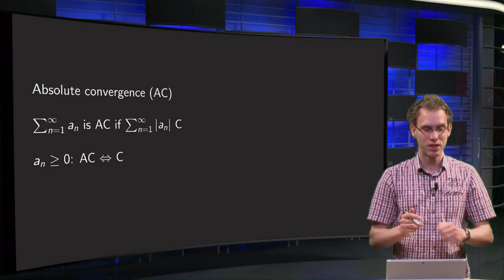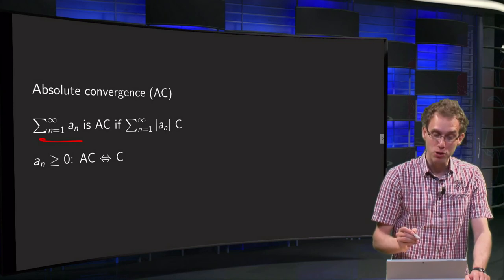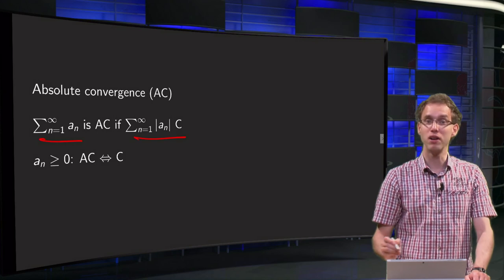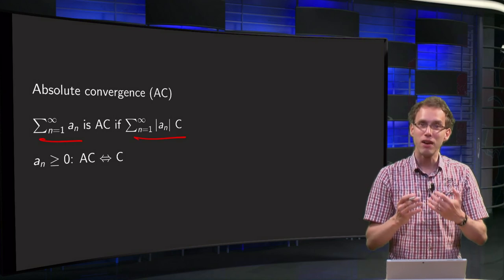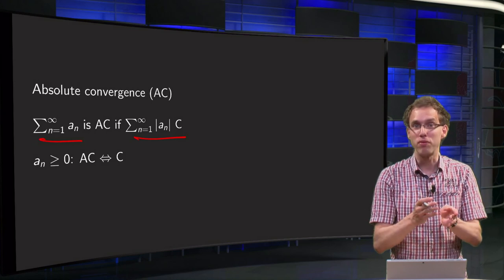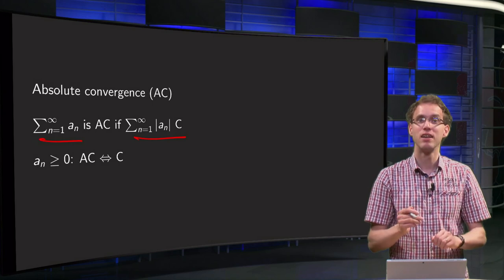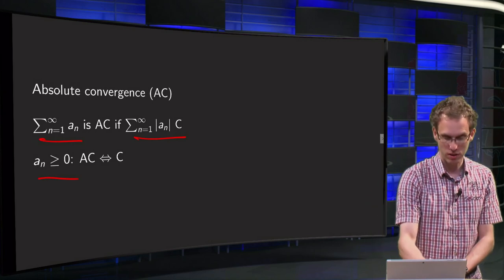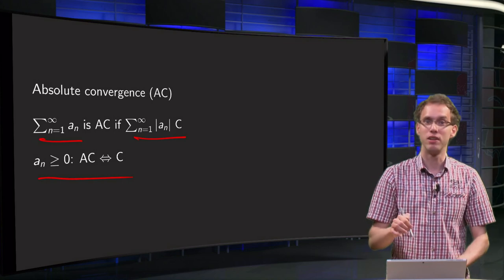The series sum aₙ is called absolutely convergent if the sum of the absolute values converges. If you have a series which has only positive terms, then the sum of the absolute values is exactly the same as the original sum, so convergence and absolute convergence are the same. In the case of positive terms we are immediately done.